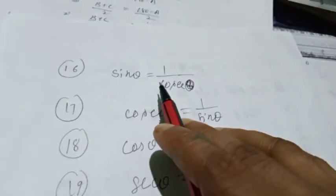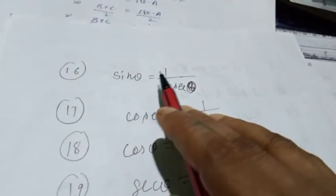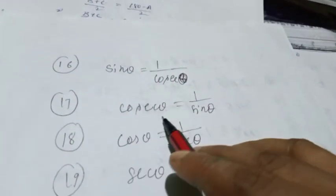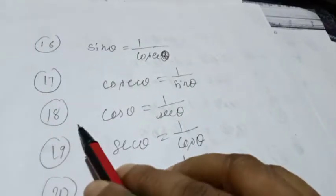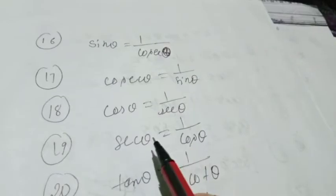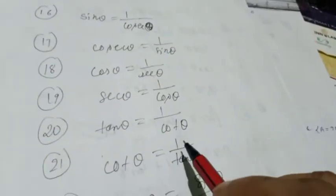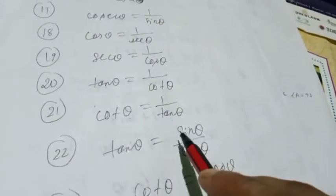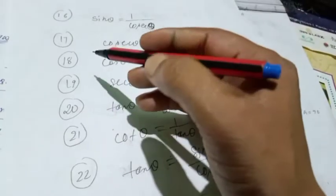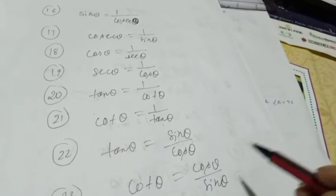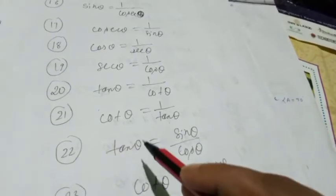Let me also remind you of the reciprocal relations you already know. sin θ and cosec θ are reciprocals: sin θ = 1/cosec θ, cosec θ = 1/sin θ. cos θ = 1/sec θ, sec θ = 1/cos θ. tan θ = 1/cot θ, cot θ = 1/tan θ. Also, tan θ = sin θ/cos θ, and cot θ = cos θ/sin θ.